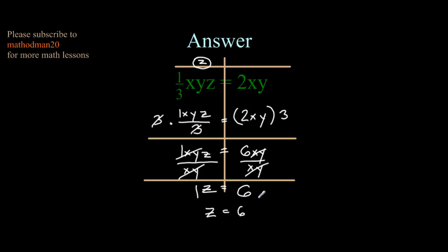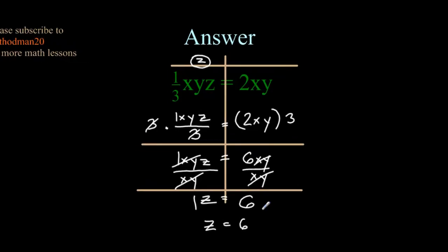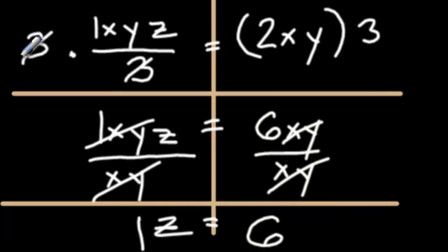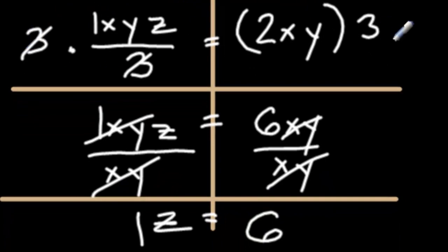Here is the answer from the previous slide, z equals 6. Remember 1/3 xyz can be rewritten as xyz on the top over 3. Those two mean the same thing. The first term I got rid of was this 3 by multiplying 3 to both sides.